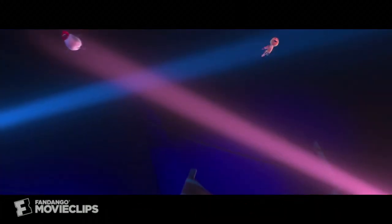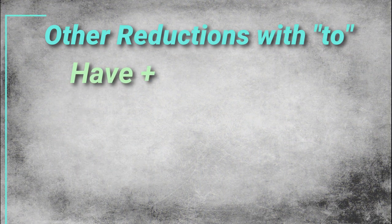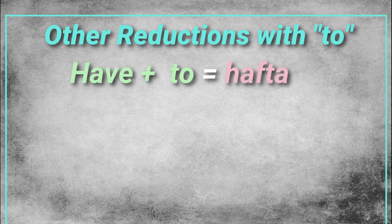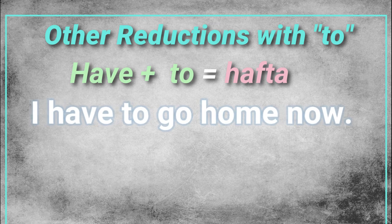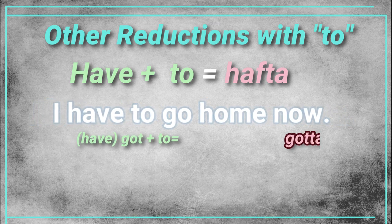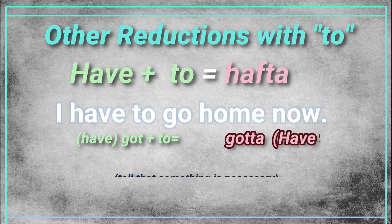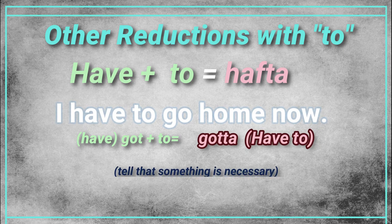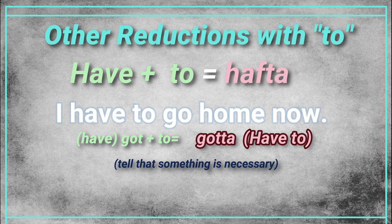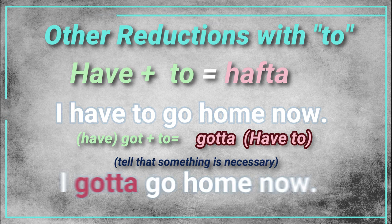There are many other reductions when "to" is placed after a verb. For example, "have to" would most likely sound as "hafta." Like in the sentence: "I have to go home now." Interestingly, the verb "got," when followed by "to," gets further reduced as "gotta," which also means the same as "have to." They are both used to explain that something is necessary. We can use that same example: "I gotta go home now."